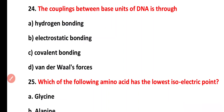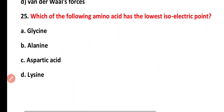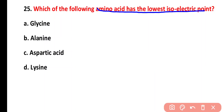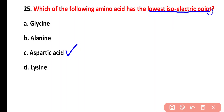Question twenty-five: which one of the following amino acids has the lowest isoelectric point? Options: glycine, alanine, aspartic acid, lysine. The correct answer is option C. Aspartic acid has the lowest isoelectric point.